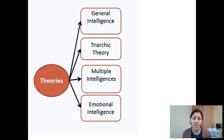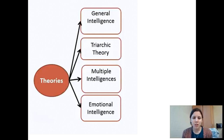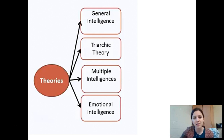So those are the four theories of intelligence: General Intelligence or G from Spearman, Triarchic Theory from Sternberg, Multiple Intelligences from Gardner, and Goleman's Emotional Intelligence. Tomorrow we'll talk a little about which one is actually right and which one you think is applicable to your life.